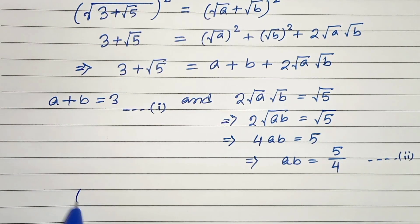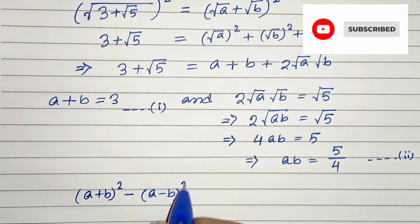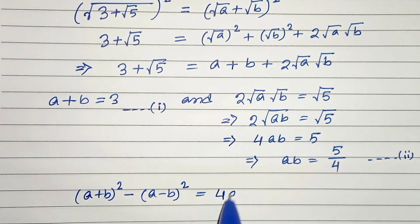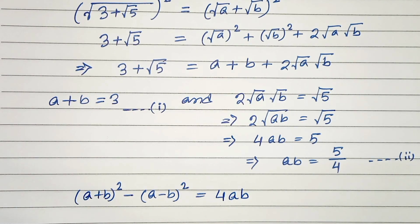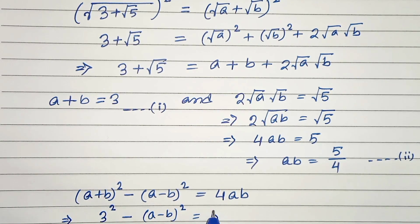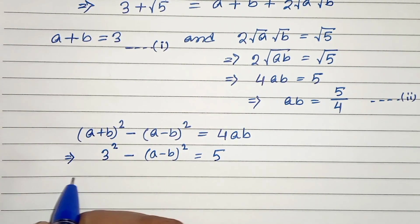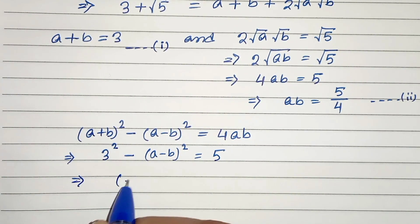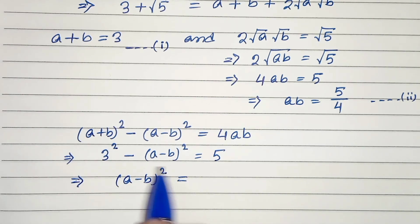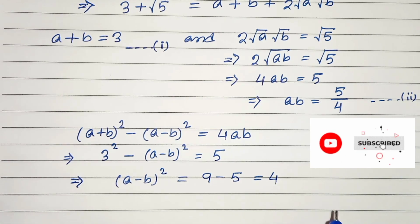Now we know the relation: (a+b)² minus (a−b)² equals 4ab. Let's put in the values: (a+b)² is 3 squared, minus (a−b)² equals 4ab which is 5. So in the next step, (a−b)² equals 9 minus 5, which is 4.